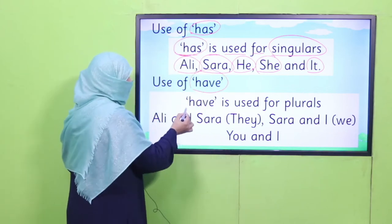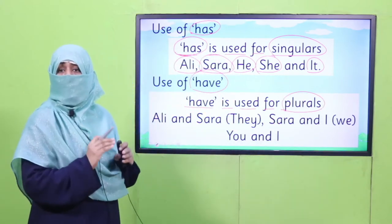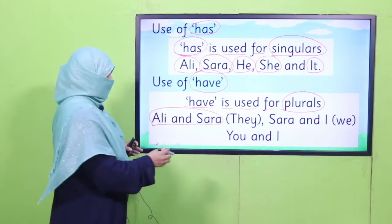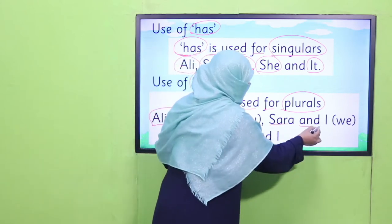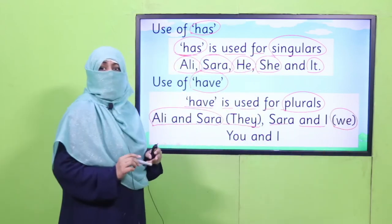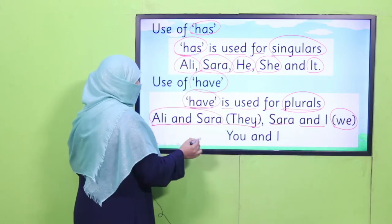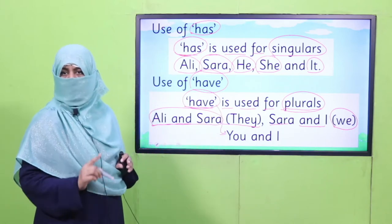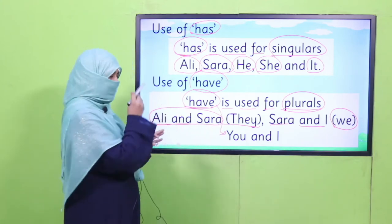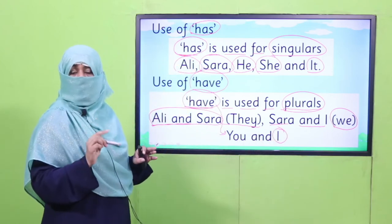And we use have: have is used for plurals. We know very well plural means more than one naming word. For example, Ali and Sara — now they are two, more than one. Or they. Sara and I — more than one, two — or we. So, if it's more than one, it's plural, we will use have. With you, we always use have, because you is used for singular and plural both.